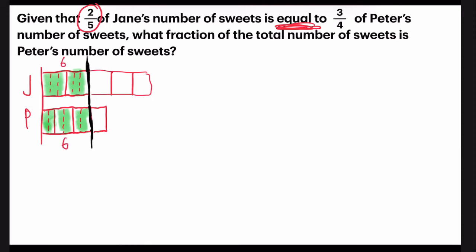So now it is very, very convenient for me to compare. But as I have cut the model into three for Jane, I should also do the same for the rest of the model. So if you count the total parts, three times five, there will be 15 units in total for Jane.